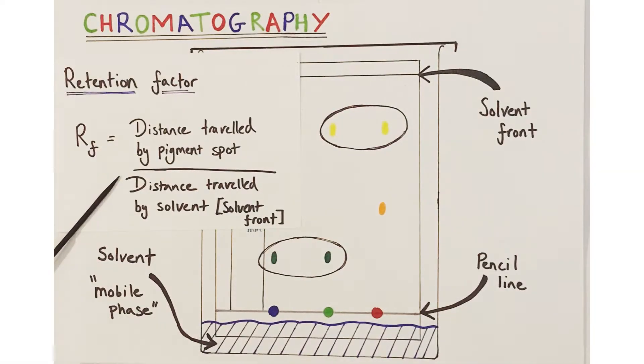The RF value is calculated by taking the distance traveled by the pigment, measured to its halfway point, dividing this by the distance traveled by the solvent, i.e., to the solvent front. Now, because one number is always bigger than the other, retention factors will always give you a number lower than one as the answer.